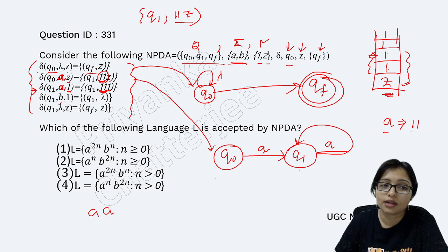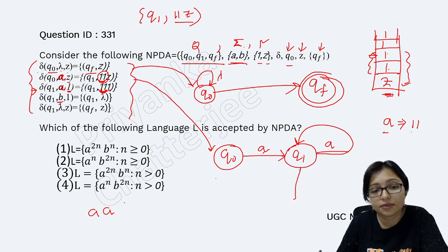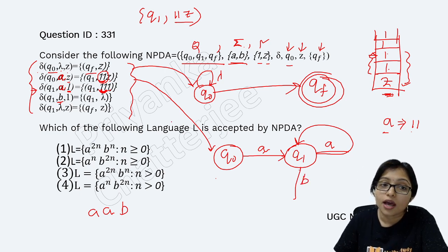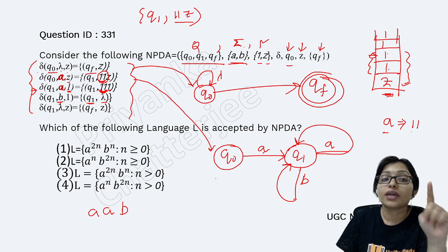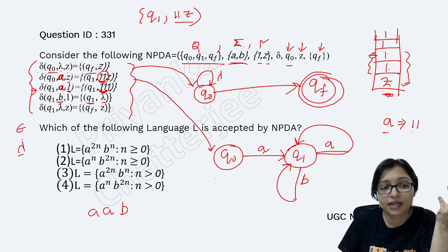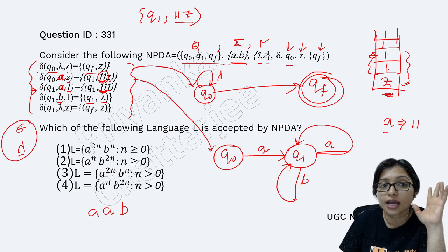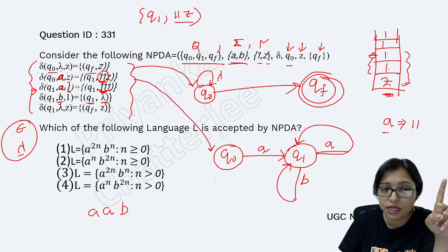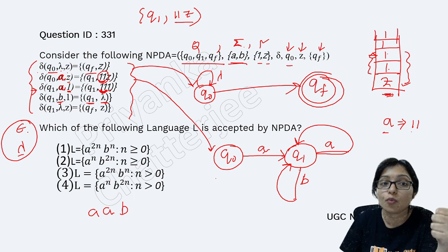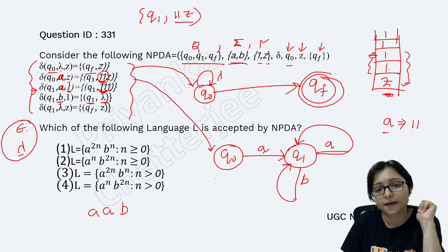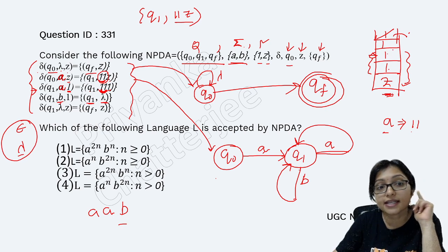Now after that in q1, if I am getting b — what am I doing? I stay in q1 only. And the meaning of lambda here is that I am going to pop. Either it can be epsilon or lambda — the meaning is I am doing a pop operation, not a push operation. Pop operation is always a single operation from the top of the stack. So for this 1 b I will pop 1 symbol — meaning the 1 on top of the stack is popped when I am getting b.